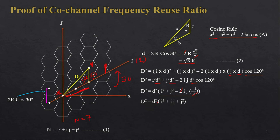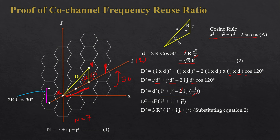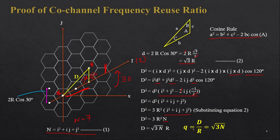Now substituting the value of small d = √3·r into this equation: D² = 3r²·(i² + ij + j²). We know that i² + ij + j² = N, so D² = 3r²·N. Taking the square root of both sides: D = r·√(3N). And that is how we prove that the frequency reuse ratio q = D/r = √(3N).